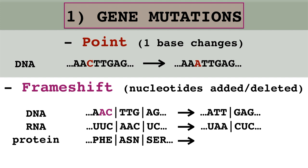The first subtype is called a point mutation. As the name suggests, it only affects one nitrogenous base of the DNA sequence. In this example, the sequence AACTTGAG changed into AAATTGAG, so the cytosine got replaced with adenine.